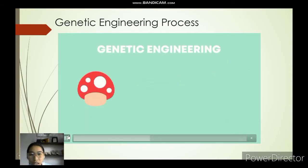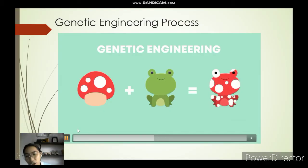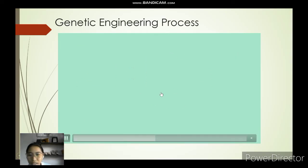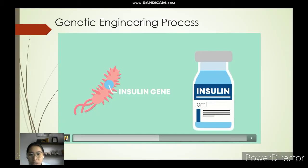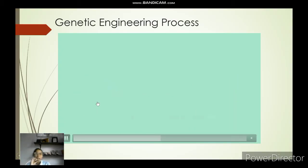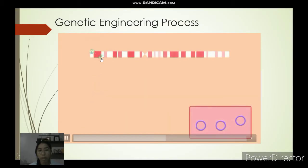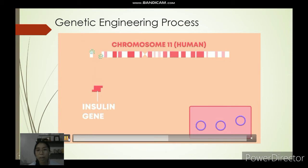To summarize genetic engineering: characteristics from one organism are combined with characteristics of another organism, producing recombinant DNA. The insulin gene is located on chromosome number 11 in humans. To extract the insulin gene from the human chromosome, restriction enzymes are used. This results in fragments with sticky ends or blunt ends.